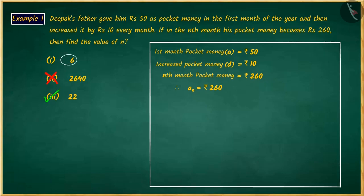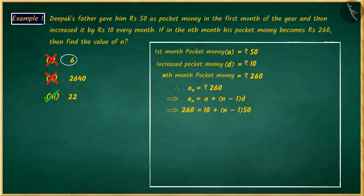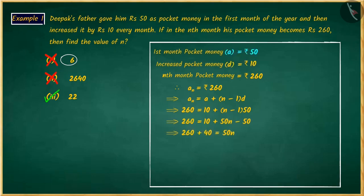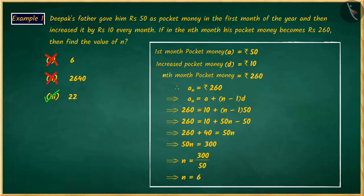If you chose the first option, it is also a good attempt, but also an incorrect answer. Here, you correctly wrote the formula for the nth term, but replaced the value of the first term with the common difference and the value of the common difference with the first term. Solving the problem by substituting those swapped values in the formula gives you the wrong answer. Hopefully, you now understand why option 3 is correct and the other options are wrong.